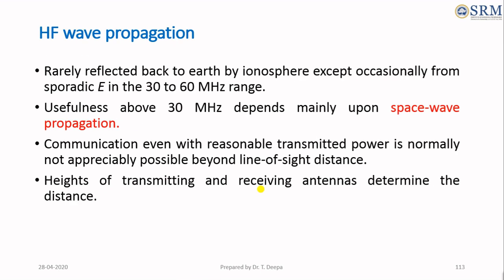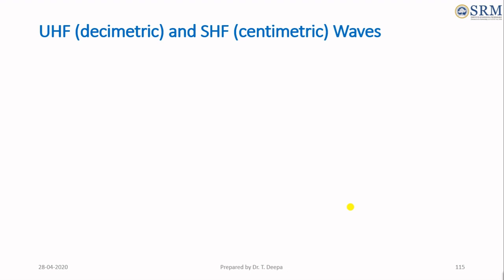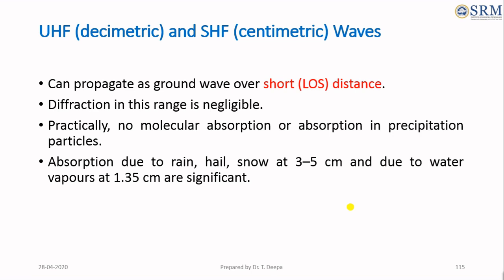High frequency wave propagation above 30 megahertz depends on space wave propagation, requiring line-of-sight distance between the transmitter and receiver. The height of the transmitter and receiving antenna determines the distance. Very high frequency waves, also called metric waves, support all modes of propagation and are capable of passing through the ionosphere as a direct wave. Ultra high frequency and super high frequency waves, also called centimeter waves, propagate as ground waves over short distances due to high frequency but shorter wavelength. Diffraction in this range is negligible, and radio waves are absorbed by rain, snow, or hail at 3 to 5 centimeters and by water vapors at 1.35 centimeters.